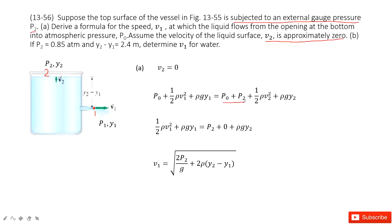At position 2, the pressure becomes p0 plus p2 because it's subjected to external gauge pressure. So it's still connected with air, giving p0 plus p2, plus one-half rho v2 squared plus rho g y2.